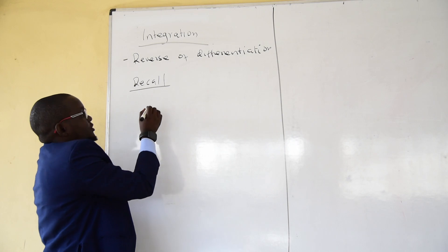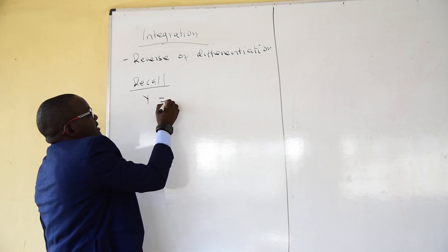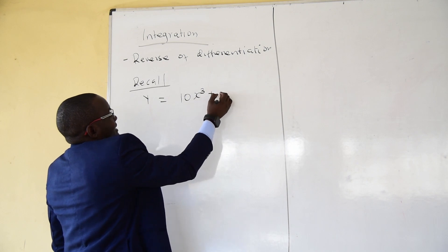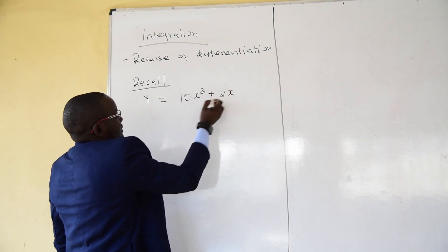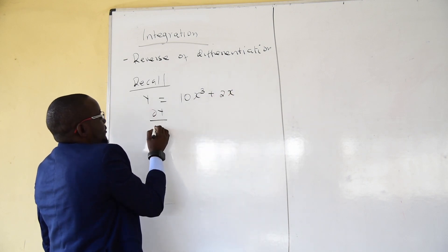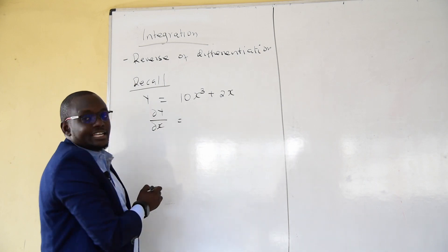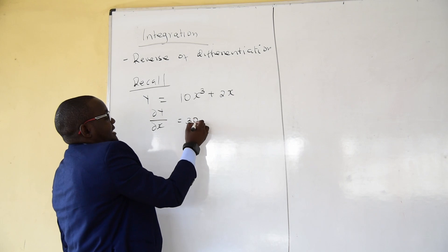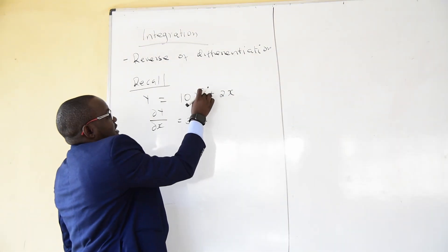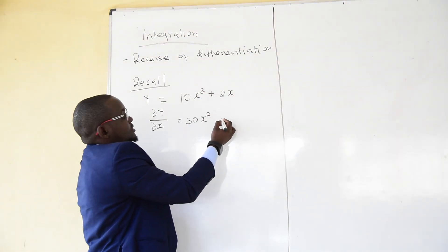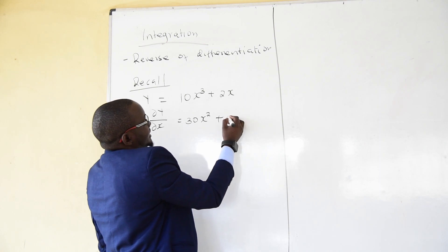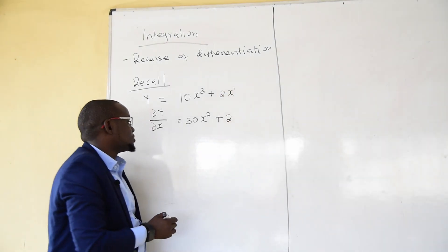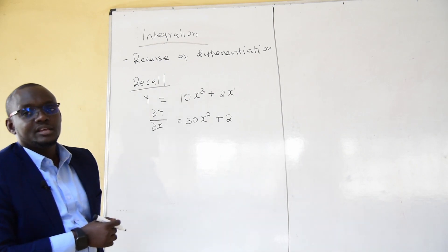Recall that when you are given y equals 10x power 3 plus 2x, you are taught to find dy over dx. To find dy over dx, you take the power and multiply: that becomes 30x squared, then this minus 1 gives power 2, and plus — this one is power 1, so 1 times 2 gives 2. That would be your differentiation.